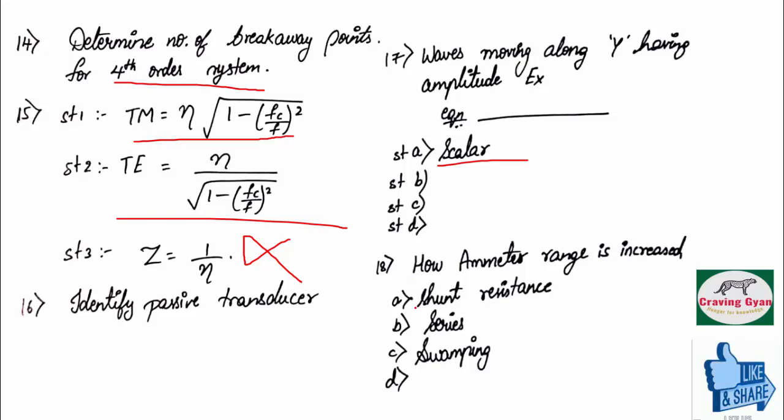We know that, in order to increase the ammeter range, the extra resistance, what you have to connect? You have to connect in parallel, nothing but shunt connections you have to make.